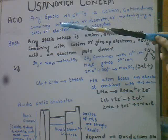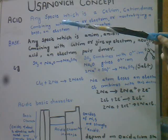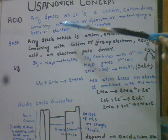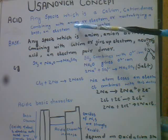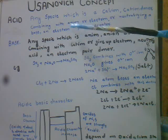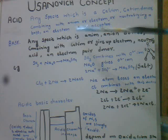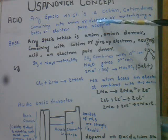Electron deficient molecule woh hoti hai jisme central atom mein octet se kam electrons hon — 6 electrons ho. For example BF3. Is mein ability hoti hai apni electron deficiency ko poora karne ke liye anion ke saath combine hone ki. Yeh anion ke saath coordinate bond banate hain. Anion means negatively charged species. Jo atom electron take up kare, use acid kehte hain.